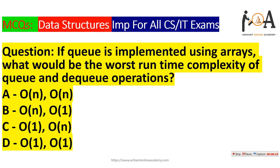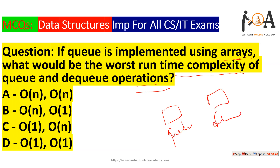The next question is: if a queue is implemented using arrays, what would be the worst-case time complexity of enqueue and dequeue operations? Separate pointers exist for both operations. Whether performing enqueue or dequeue, we only require constant time, which is O(1). So option D is the correct answer.